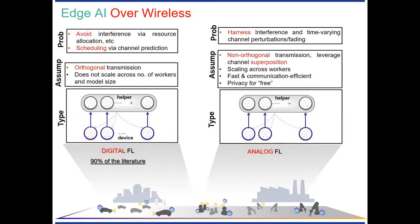From a wireless perspective, federated learning can be seen from two different perspectives. The one on the left, referred to as digital federated learning, represents most of the current literature. Here, for a parameter server model training, every client is assigned an orthogonal resource block, channel, or carrier so that it can transmit its model reliably to the server. The idea is to avoid interference from simultaneous transmissions among many clients, so orthogonal resources are allocated among clients.